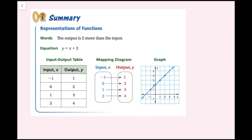Let's look at all the different representations of functions we've gone over. You can think of a function in words — 'the output is 2 more than the input' — or as an equation: y equals x plus 2. You can use an input-output table with input x values and corresponding output y values. You can also write a function as a mapping diagram, where inputs have arrows pointing to outputs, and finally as a graph.